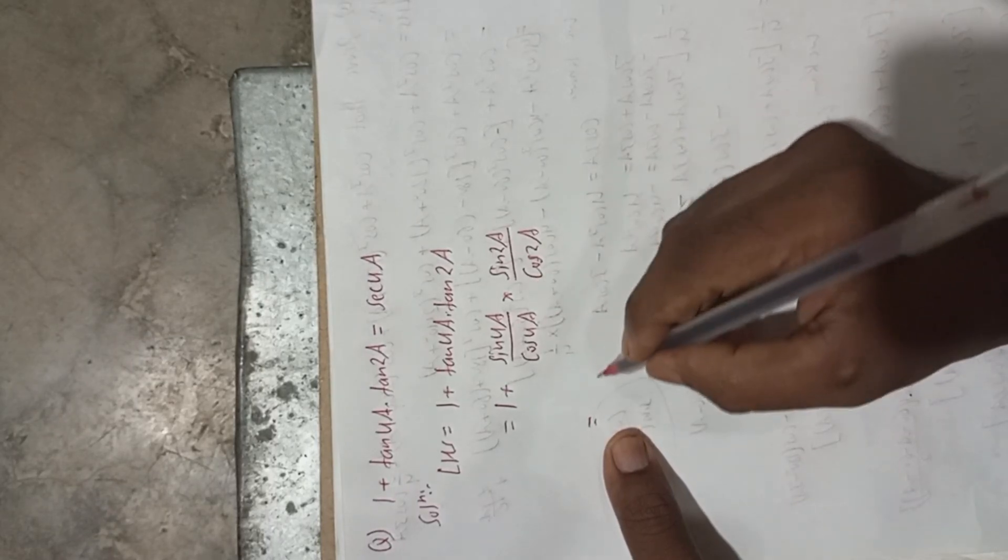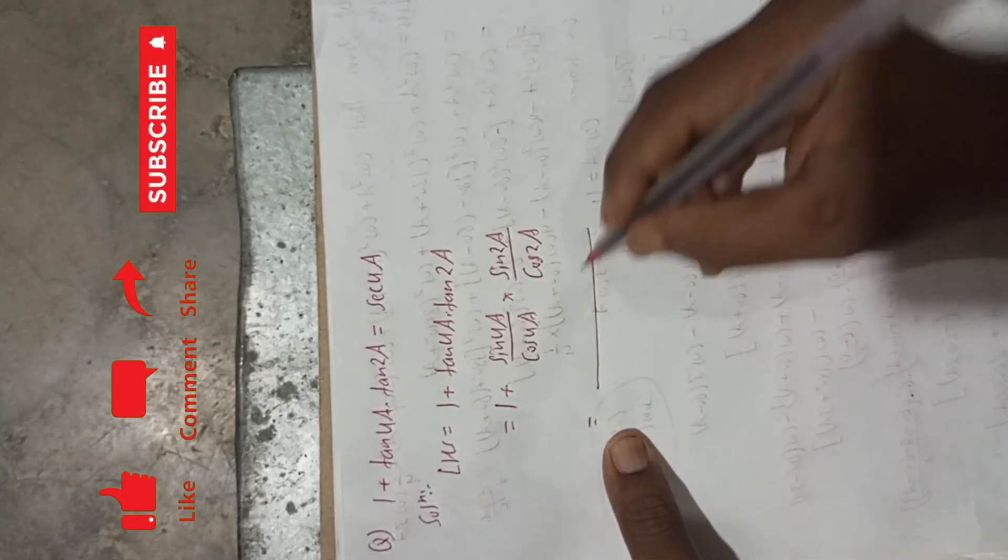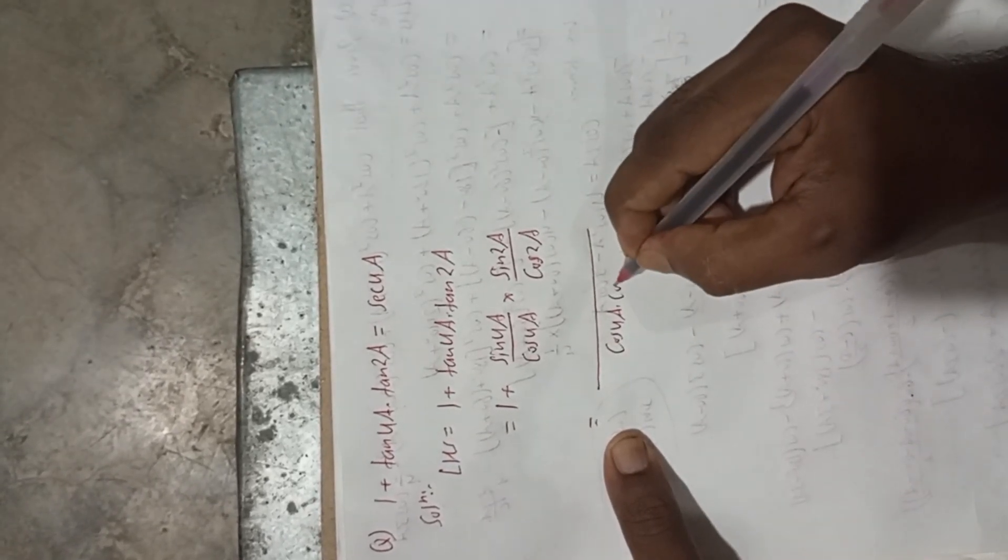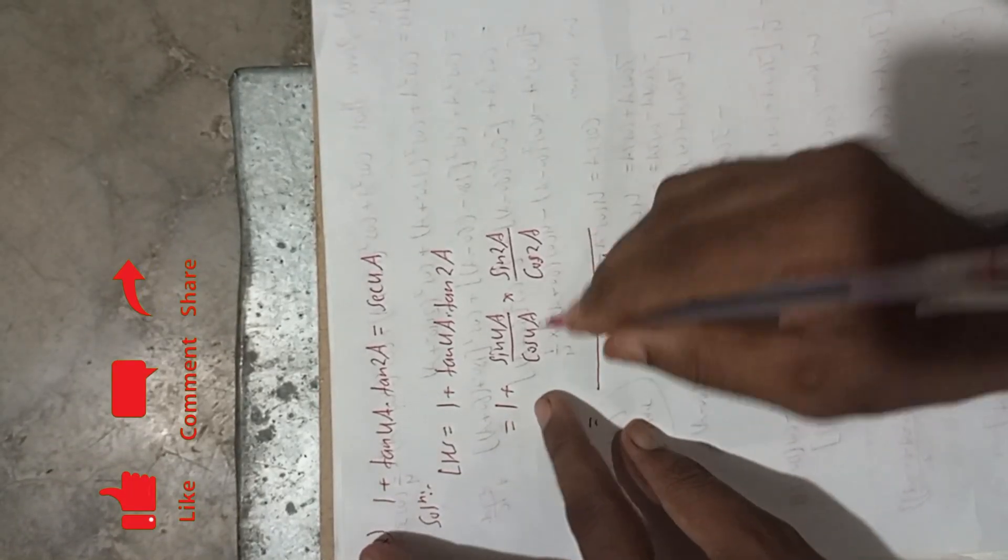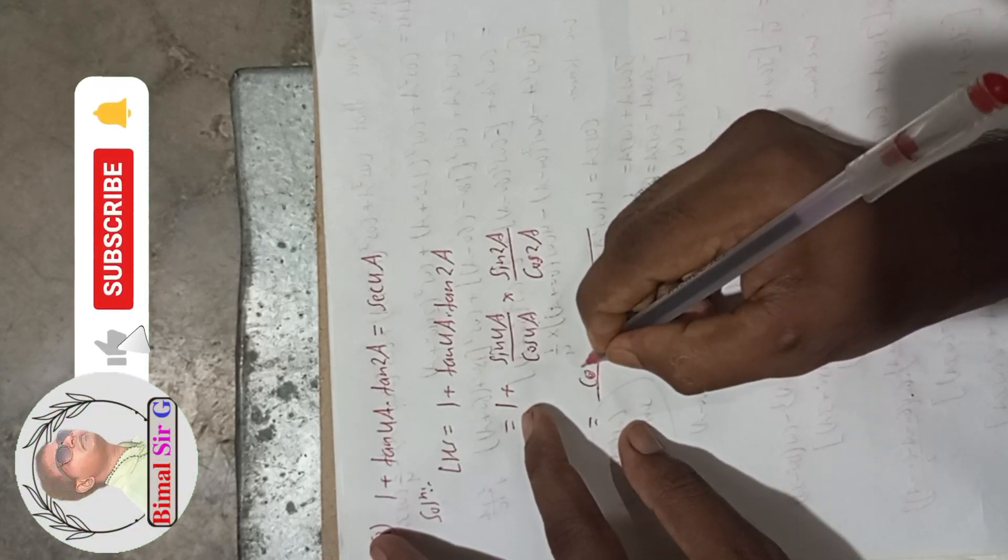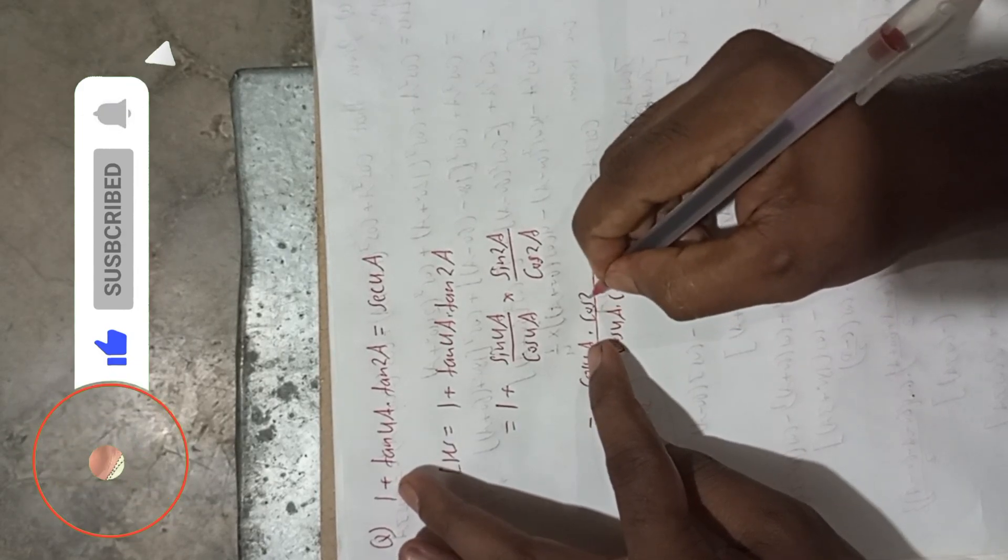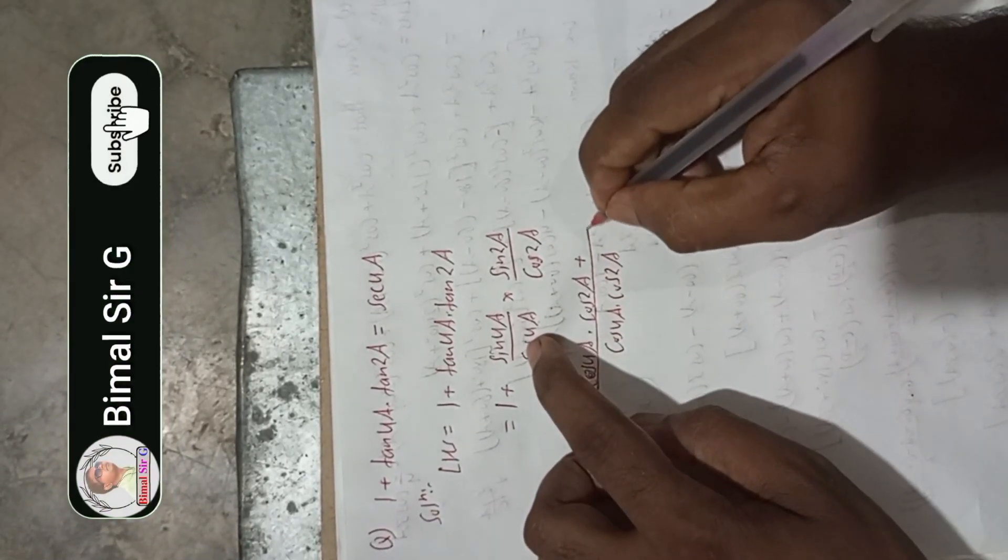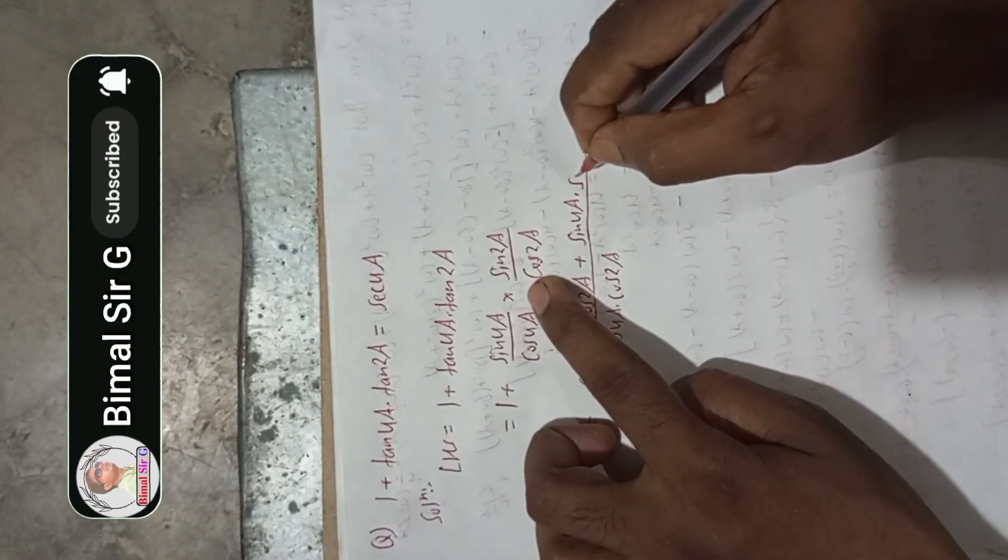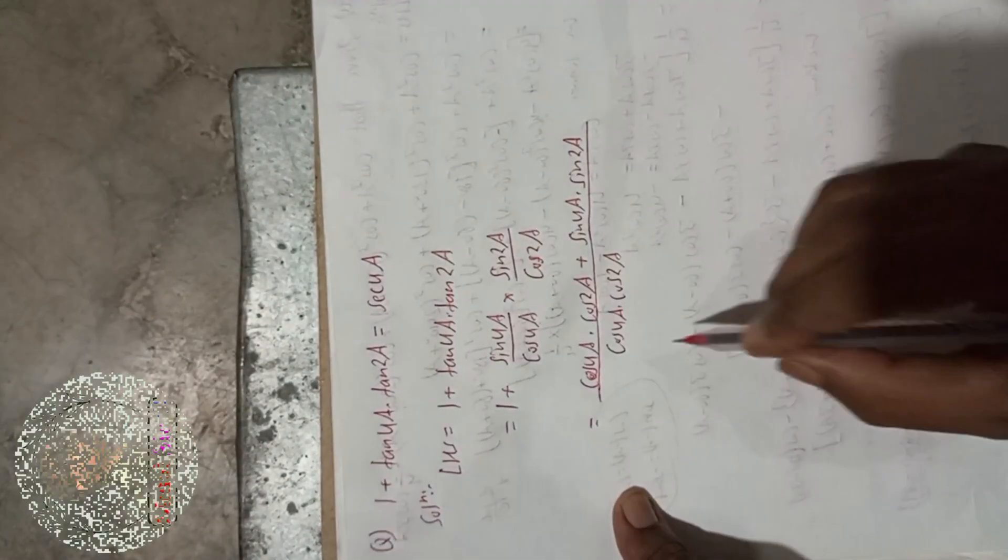Now we can take the LCM. The LCM is cos(4a) × cos(2a). When we multiply, this will be cos(4a) × cos(2a) + sin(4a) × sin(2a).